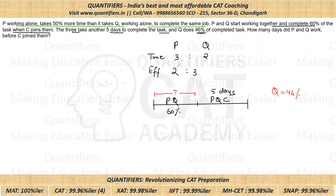Now use this information: since the ratio of their efficiency is 2:3, when P and Q did the 60% of the work together, they must have done it in the ratio 2:3. So we can divide 60 accordingly — P must have done 24% of the work and Q must have done 36% of the work.